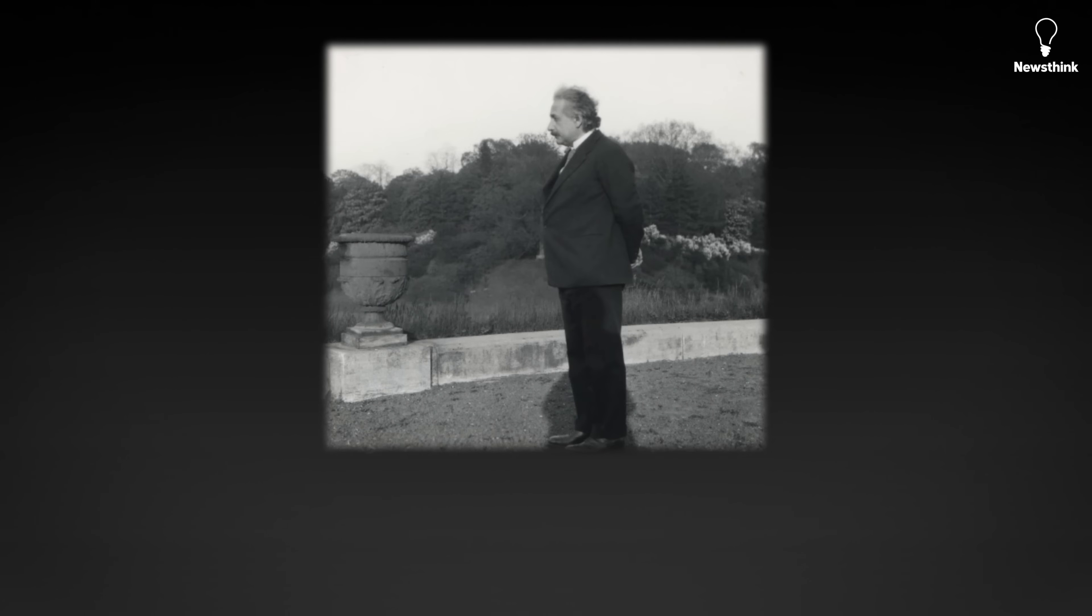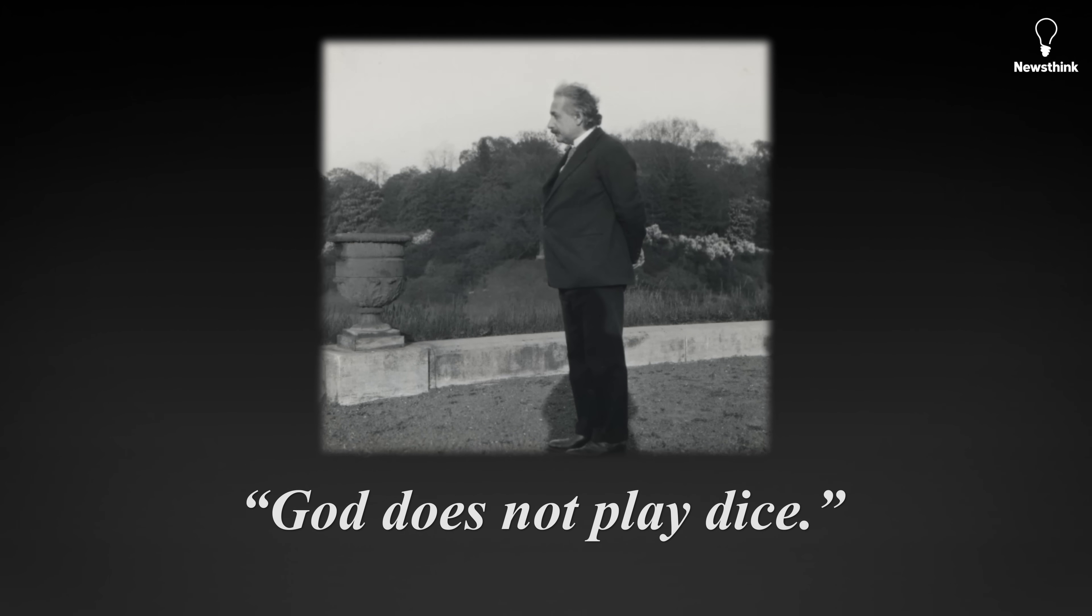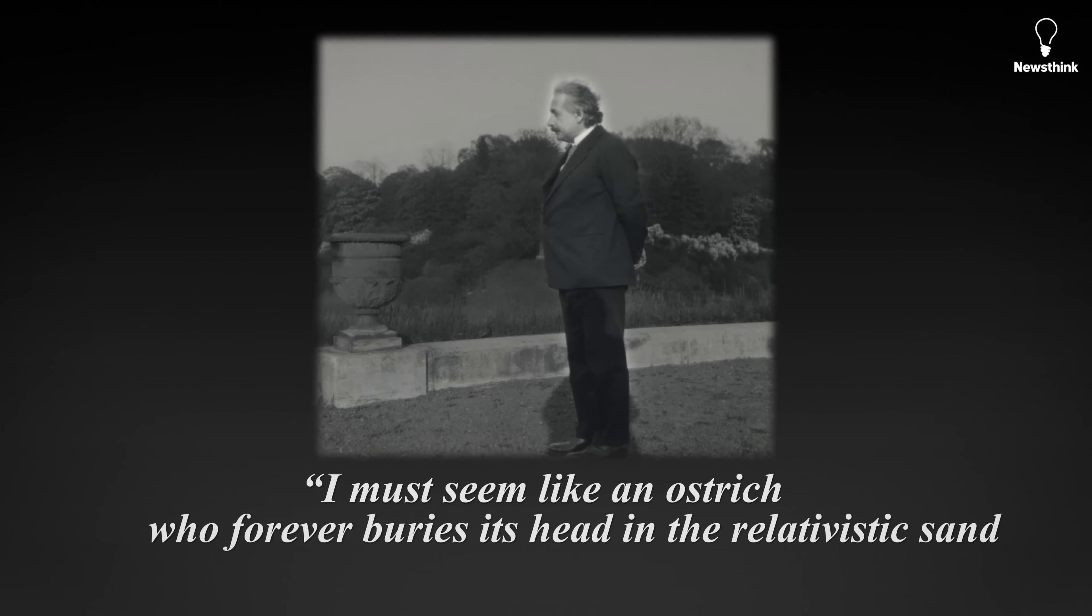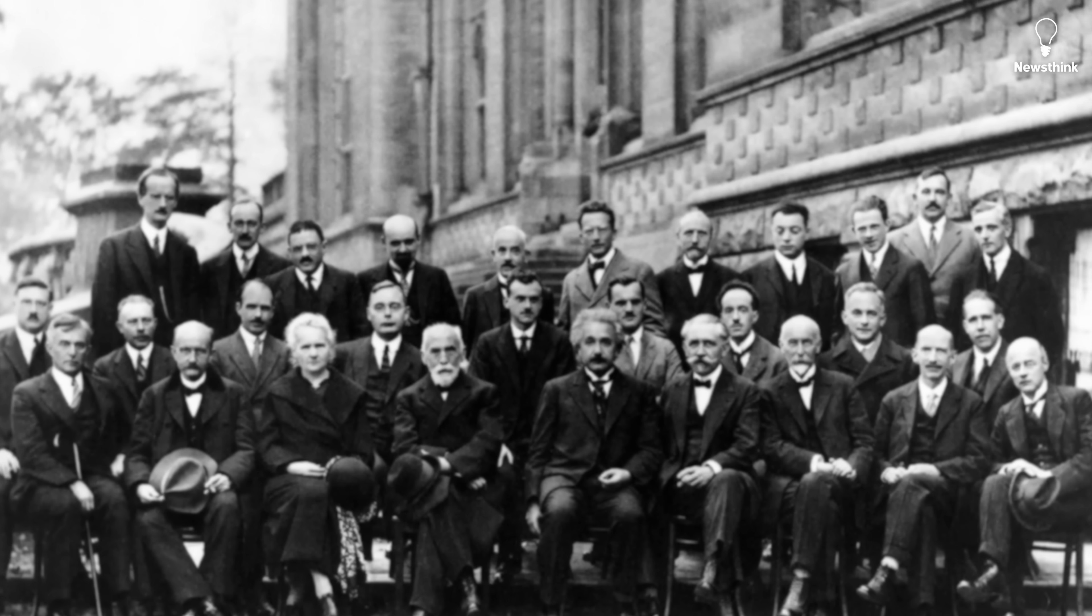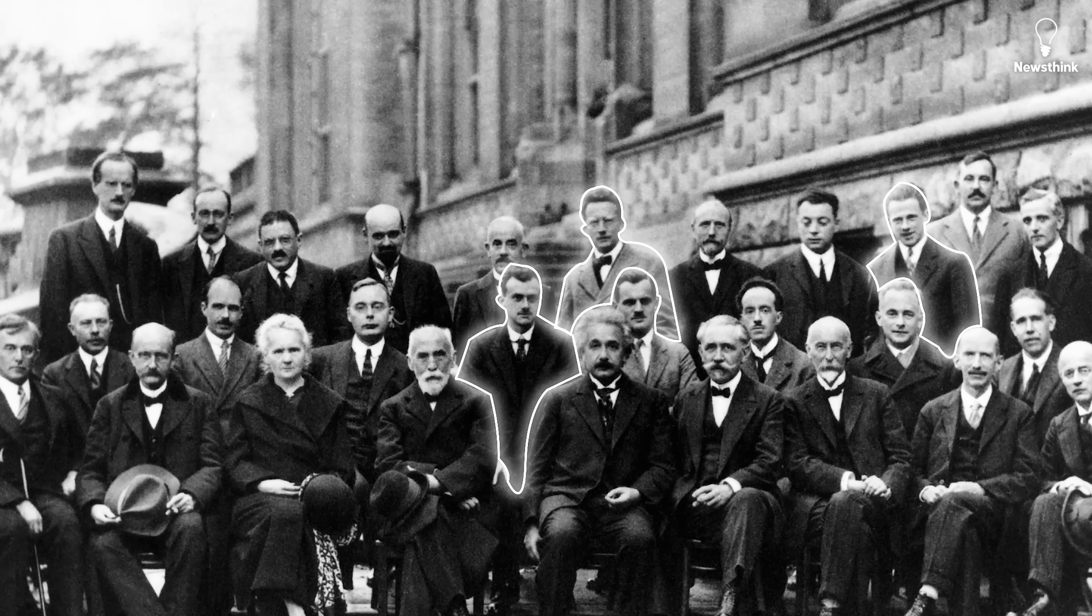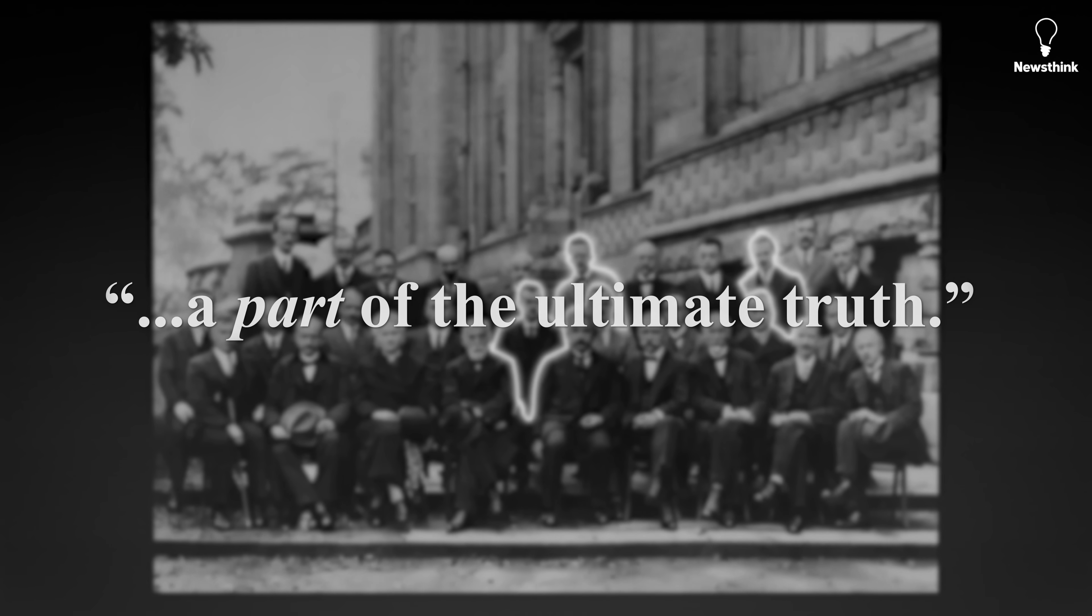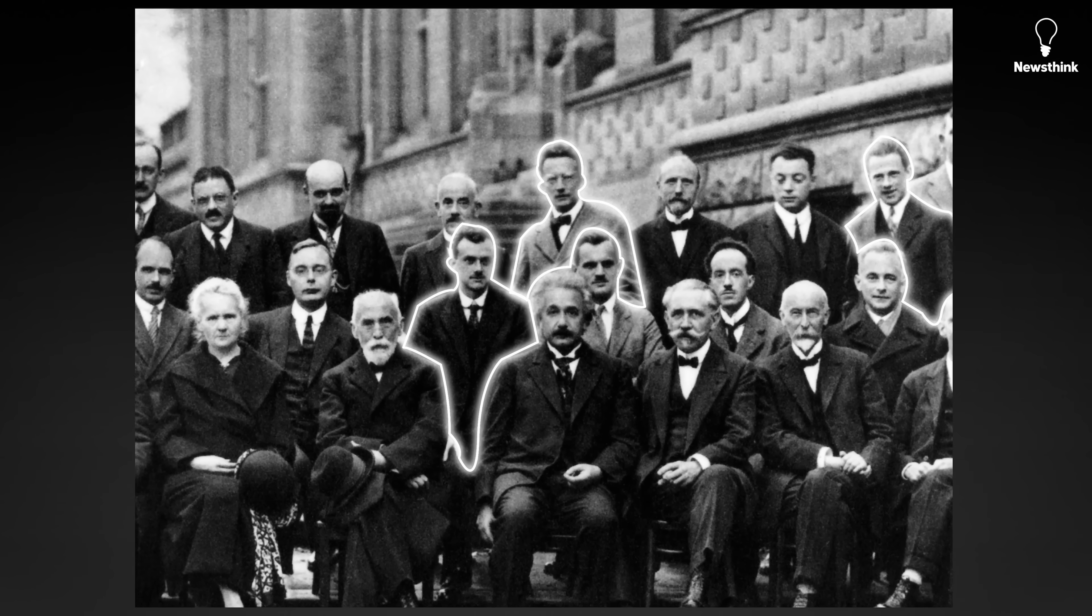Quantum theory made Einstein deeply uneasy. He was uncomfortable with the randomness and famously wrote to physicist Max Born, God does not play dice. He also joked to another colleague, I must seem like an ostrich who forever buries its head in the relativistic sand in order not to face the evil quanta. By the 1920s, physics was being transformed by the revolution of quantum mechanics, driven by young physicists like Heisenberg, Schrodinger, and Dirac. Einstein conceded that quantum mechanics contained a part of the ultimate truth, but insisted it wasn't the whole truth. For Einstein, only a unified field theory could provide a deeper, complete explanation.